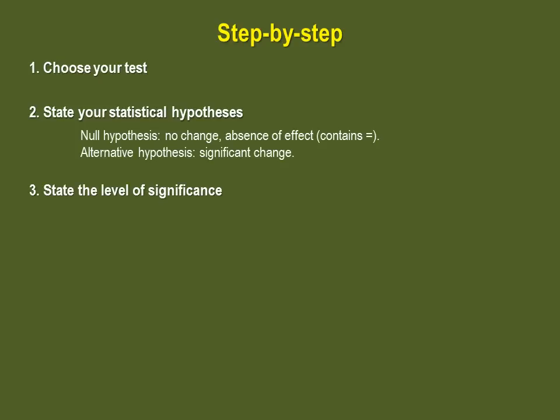Step 3 is to state the level of significance. Although any level of significance can be used, in this class, unless otherwise specified, we will use alpha equals 0.05. This means we have a 5% chance of rejecting your null hypothesis if it is true.